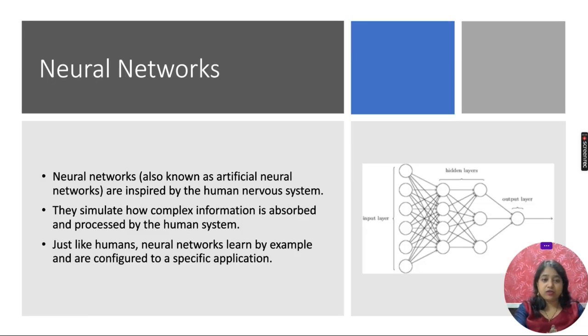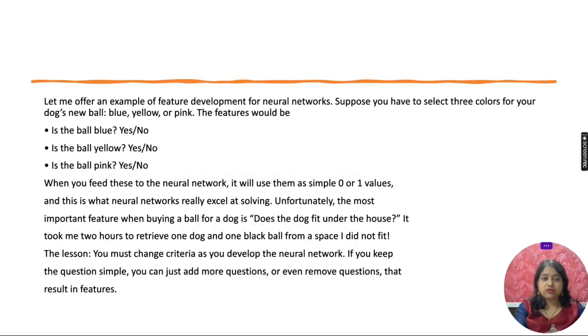Neural network, also known as artificial neural network, are inspired by the human nervous system. They simulate how complex information is observed and processed by the human system. Just like human neural networks, they learn by example and are configured for specific applications. Step by step, they learn.